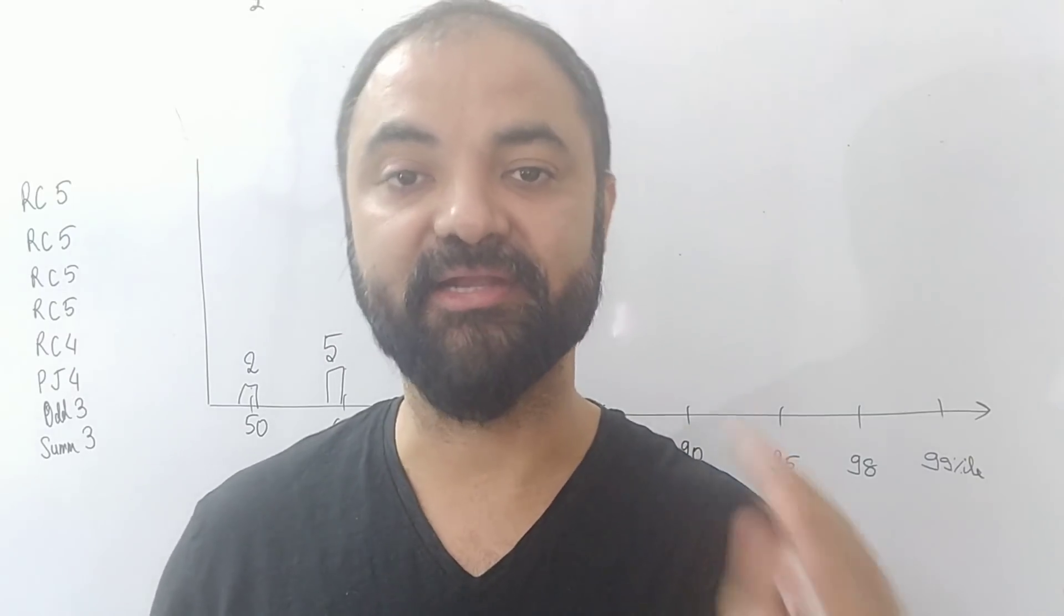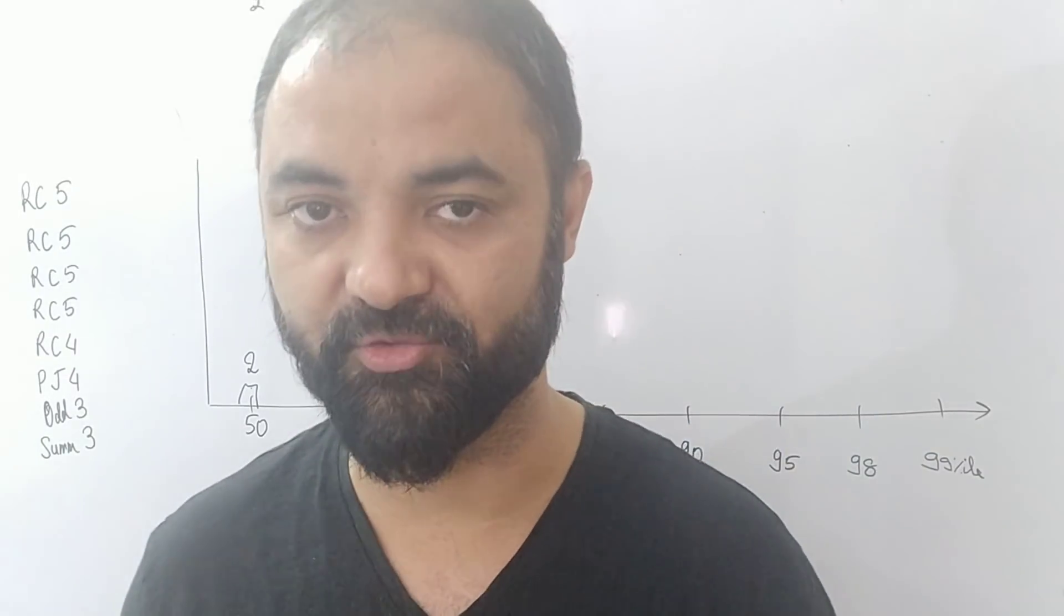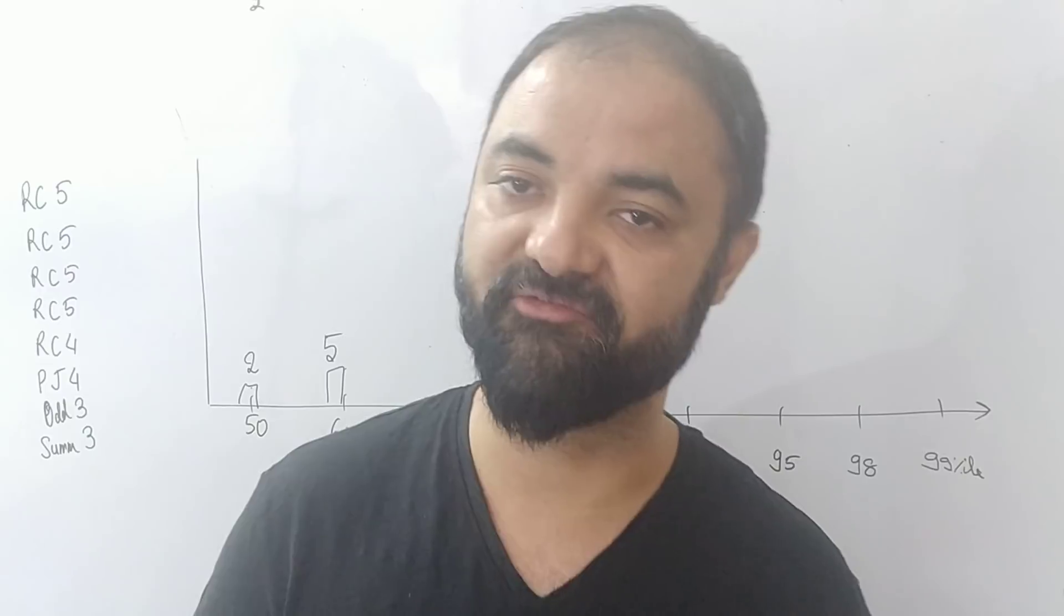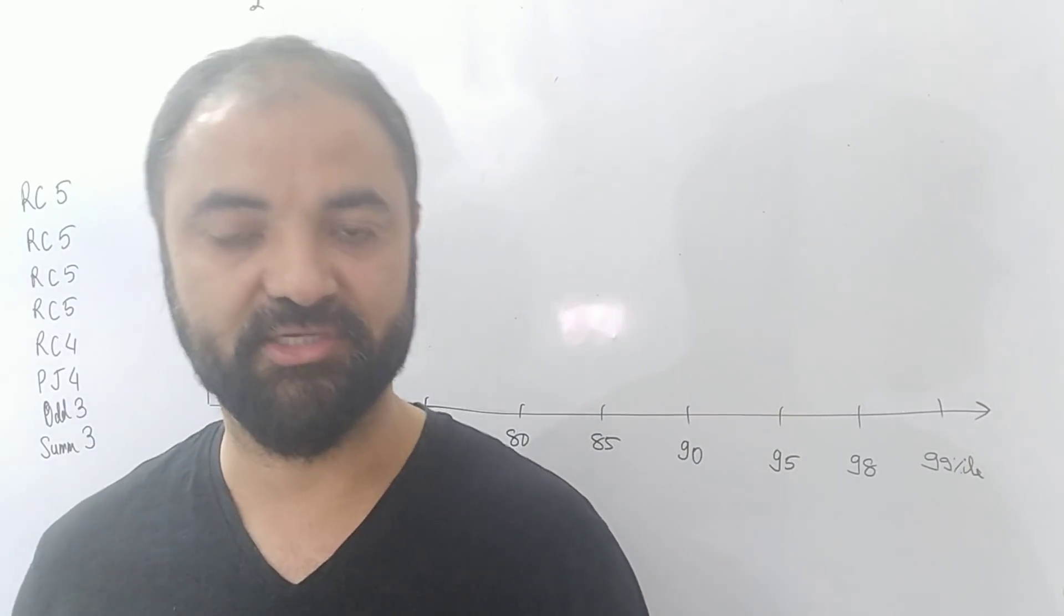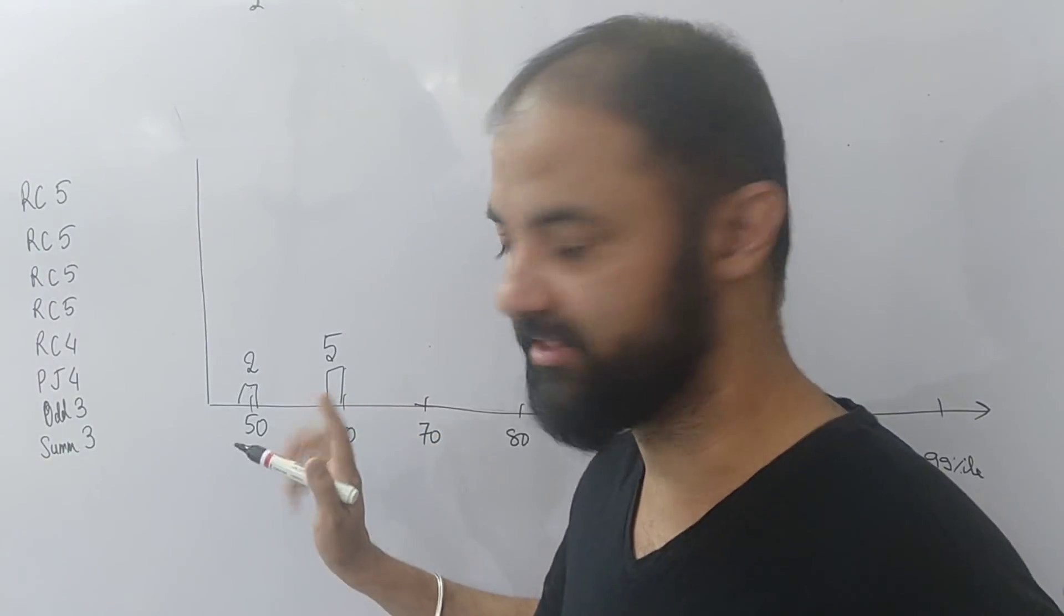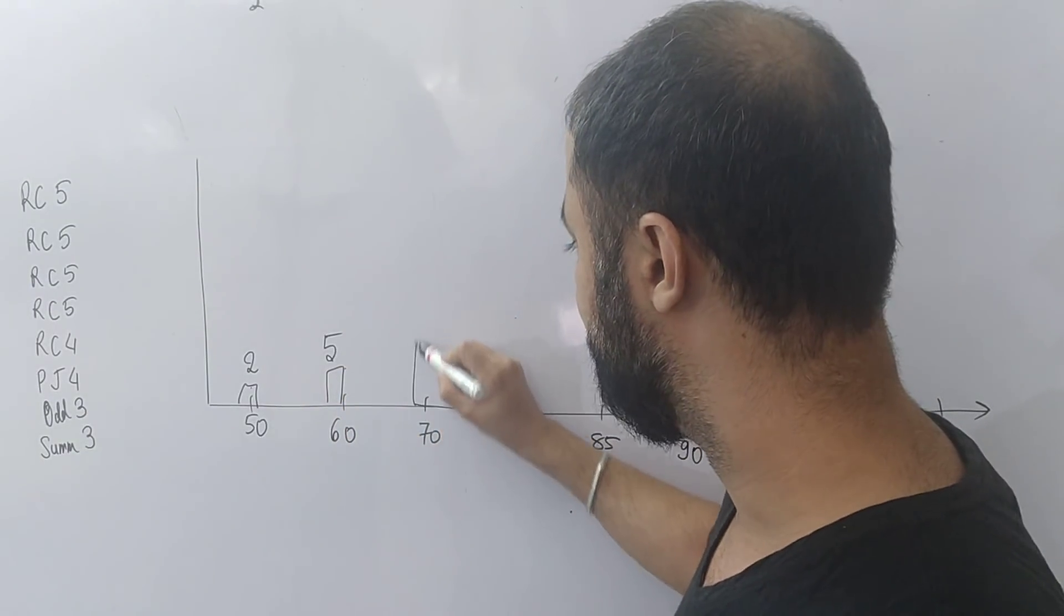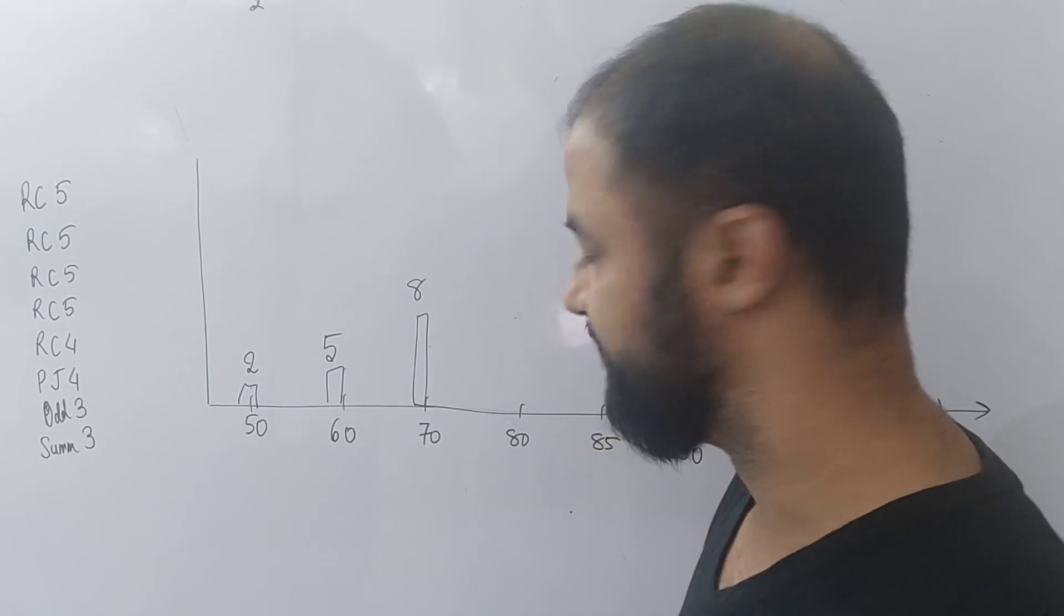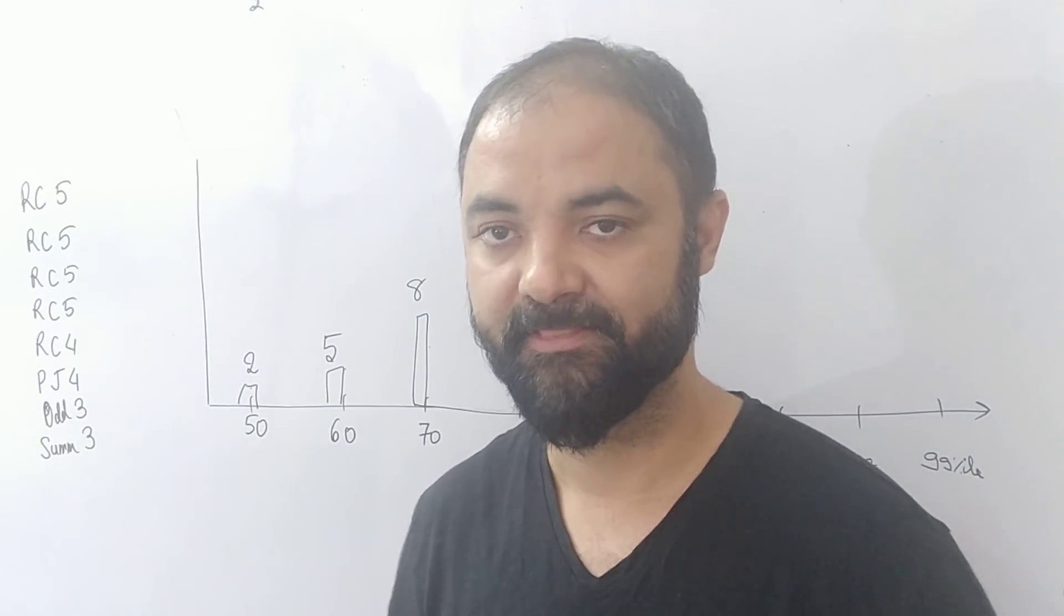So attempt kitna karna hai, attempt kitna kiya tha, based on that you can find your accuracy. And this year paper is available so you can check out your key and find out your accuracy. 5 questions correct is around 60 percentile this year. 8 questions correct is around 70 percentile.